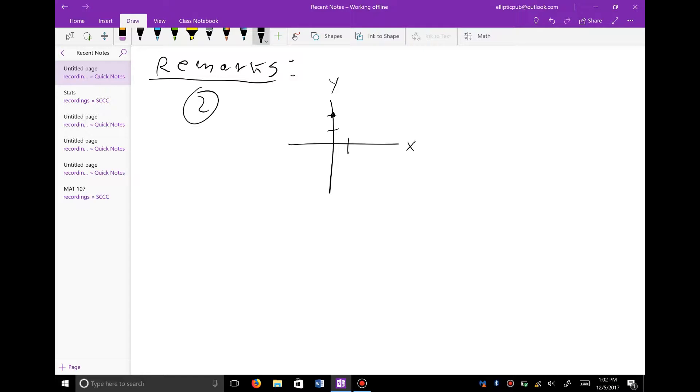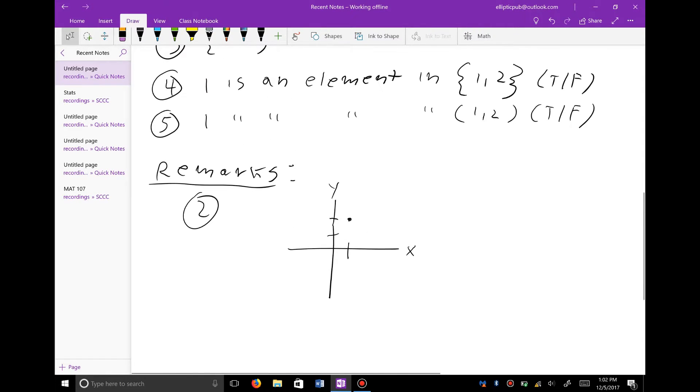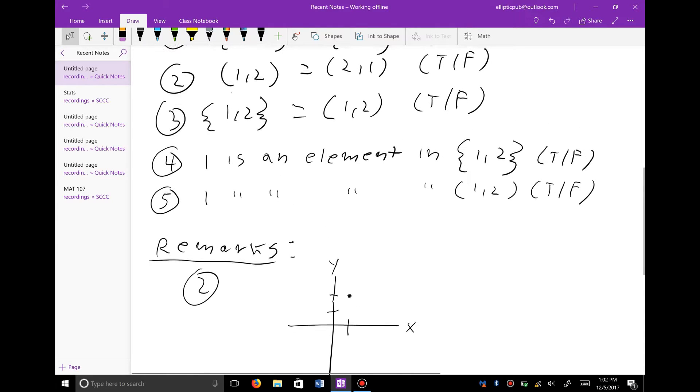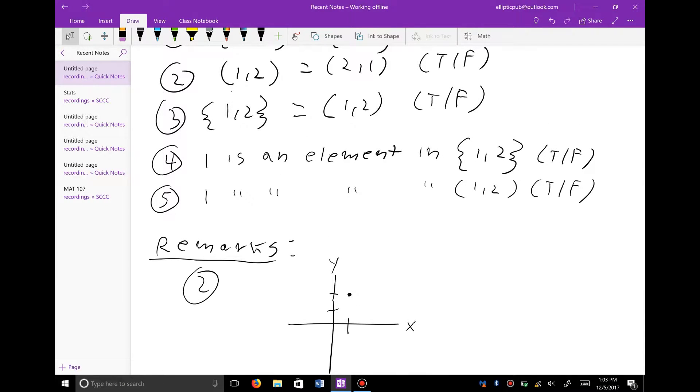I'm sorry. Yikes. A little mistake. That's okay. If we were to plot one comma two, we would get this point over here. Let me label this for you. This is one comma two, and this is two comma one.